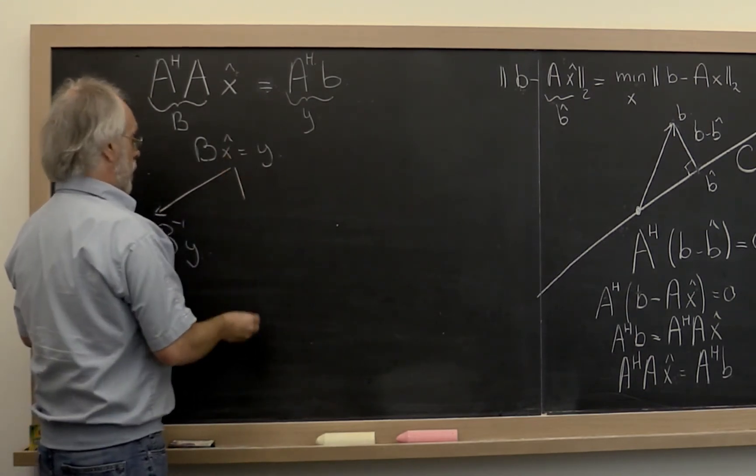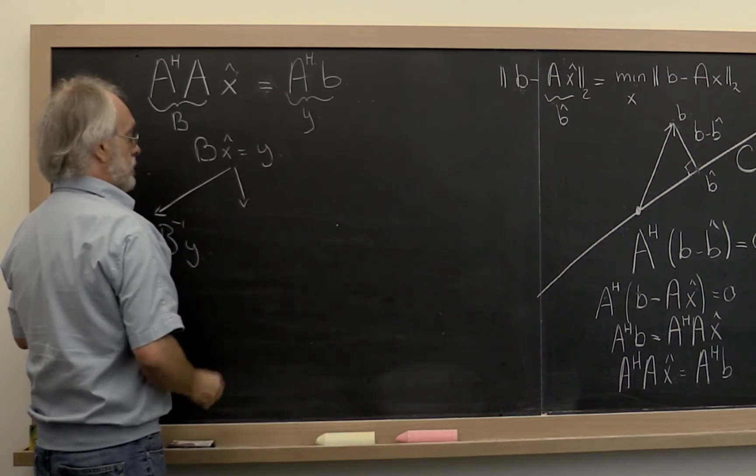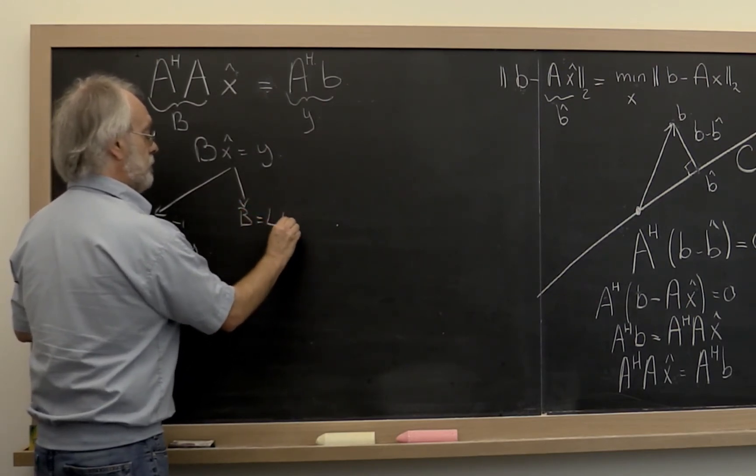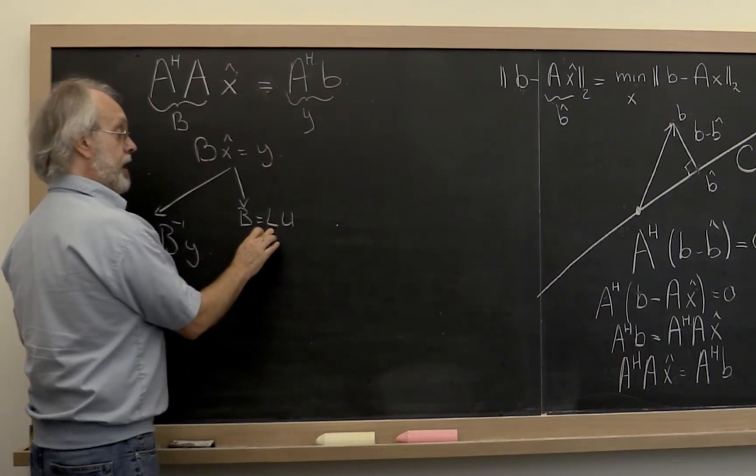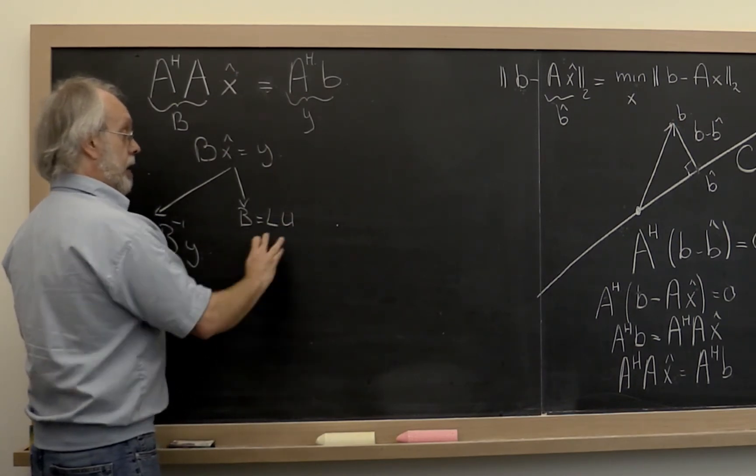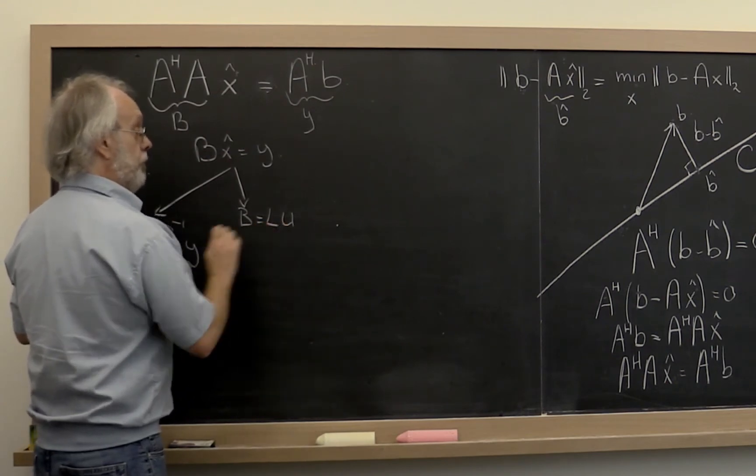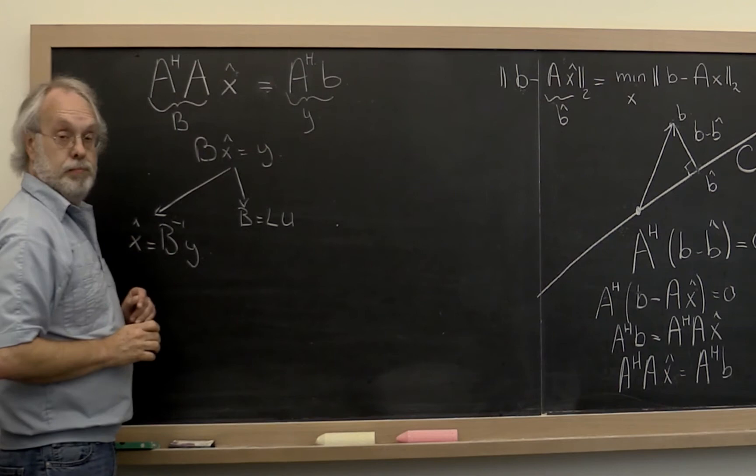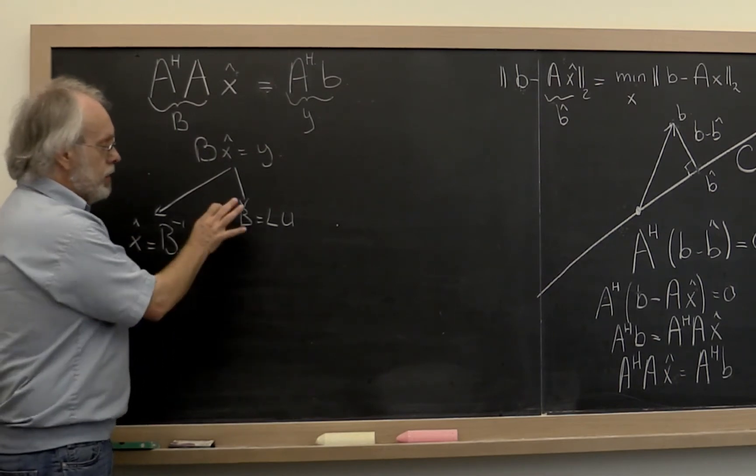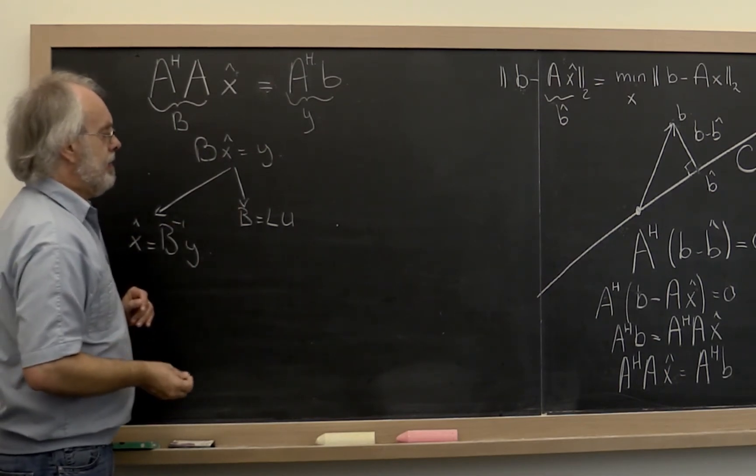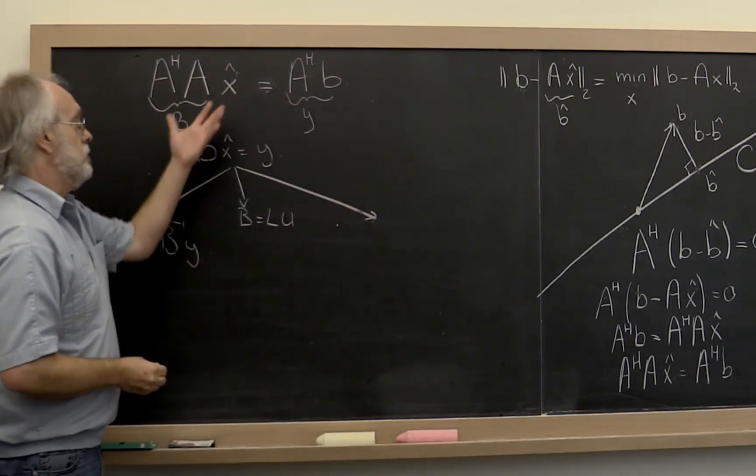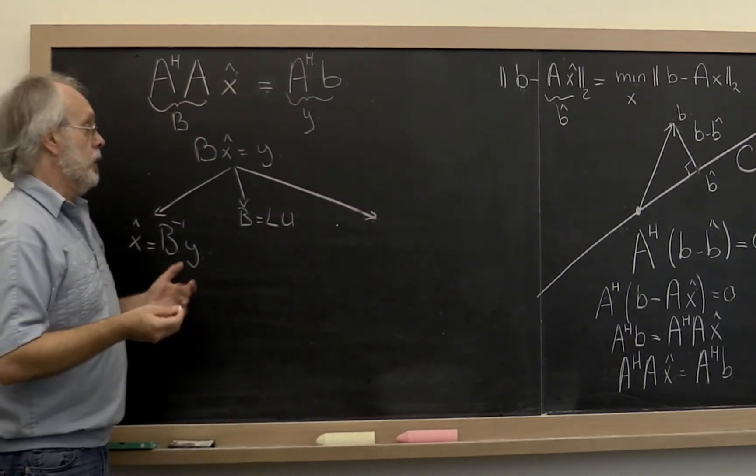You may have been taught in an undergraduate course that you can take your B and compute its LU factorization, where L is a unit lower triangular matrix and U is an upper triangular matrix. And then you can use that LU factorization to solve for x hat. Rather than going into the details of that, let's actually go to how one usually does it when it comes to solving the normal equations.